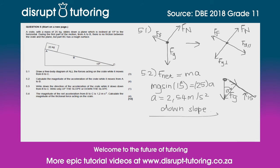That is the answer for 5.2. Remember the A to B part of the slope doesn't have any friction, and if it did then we'd have to take the frictional force into account.